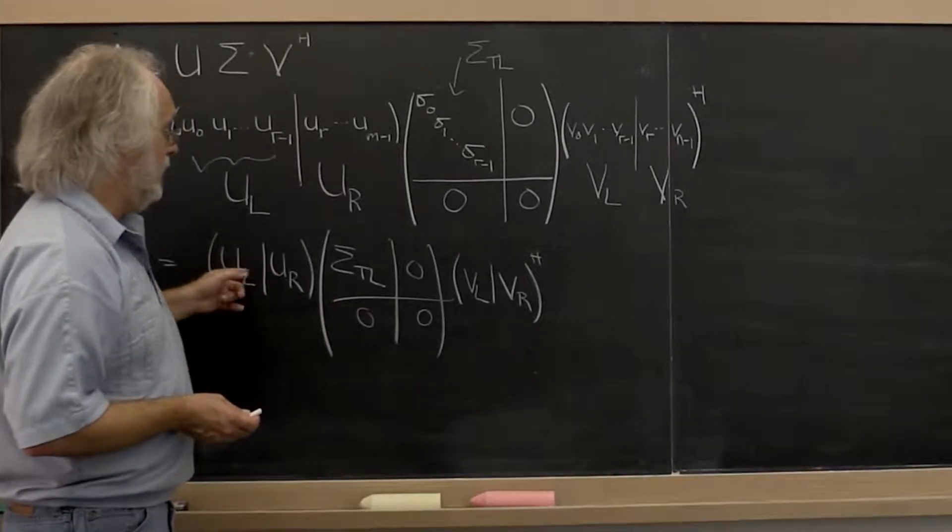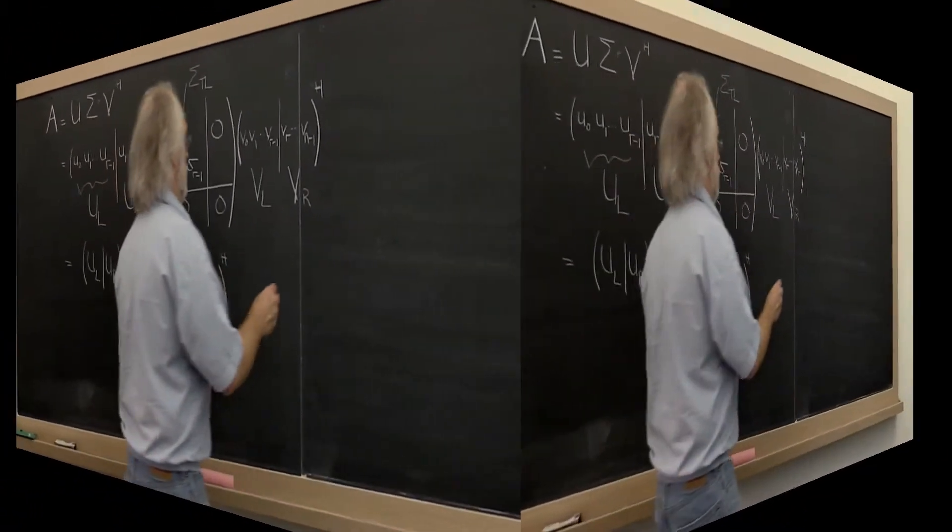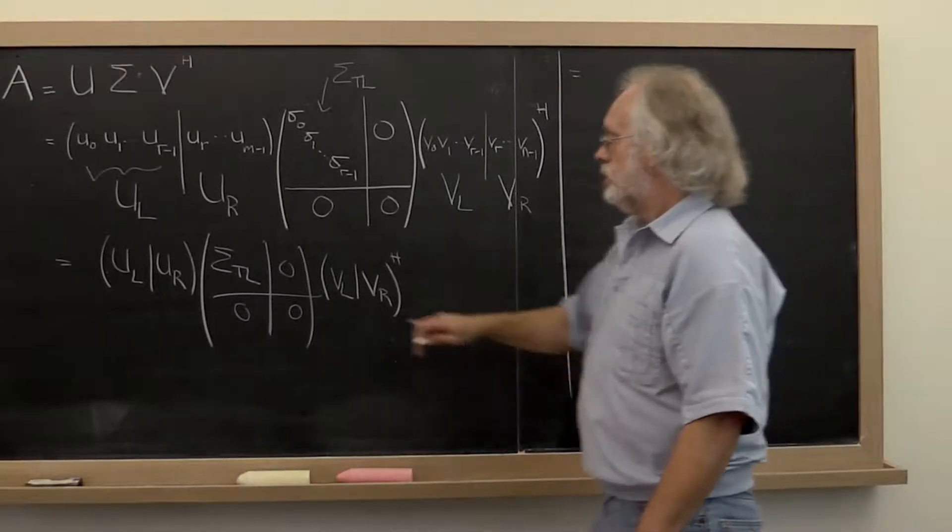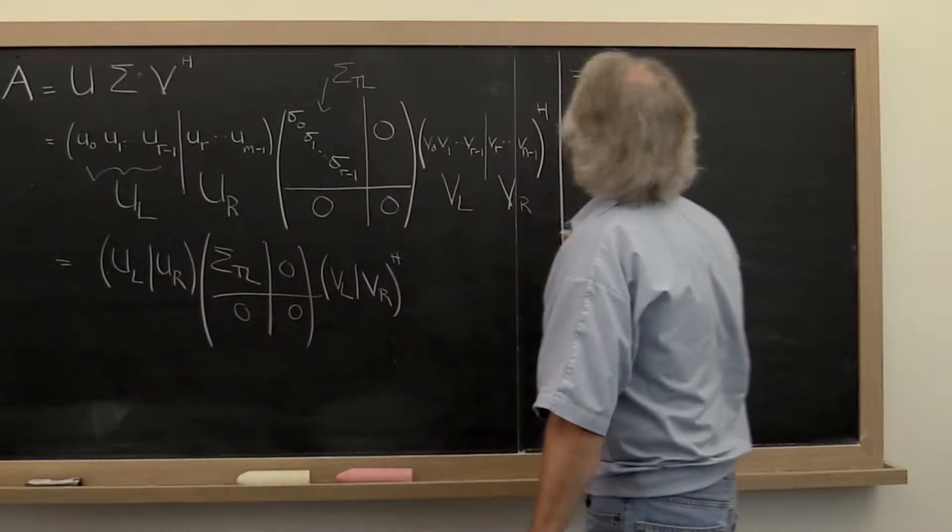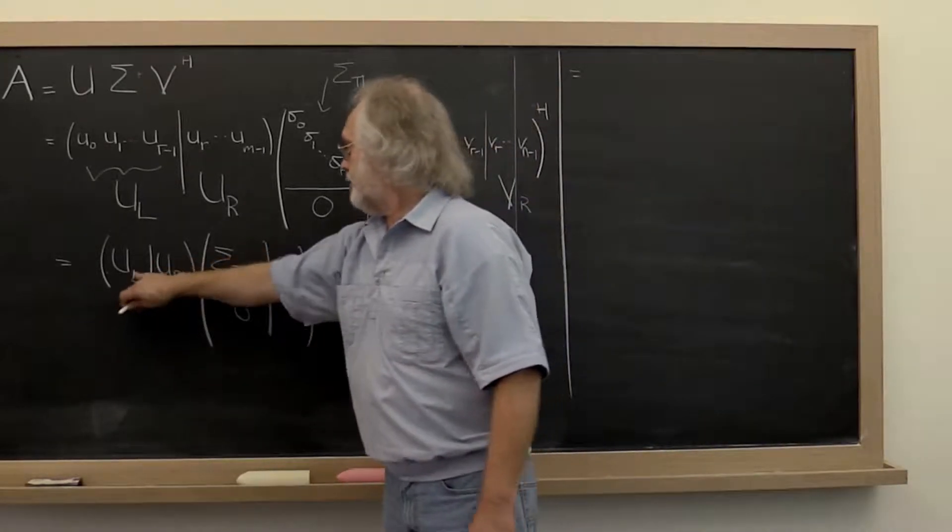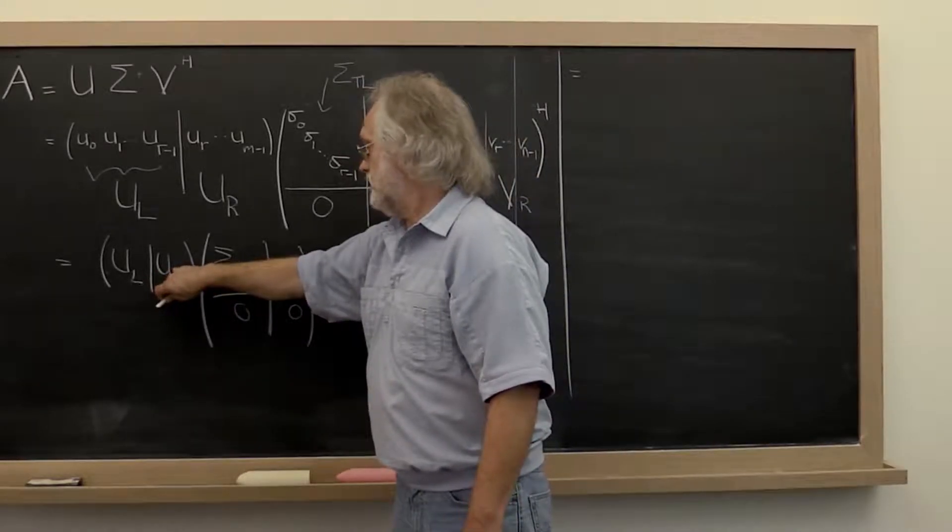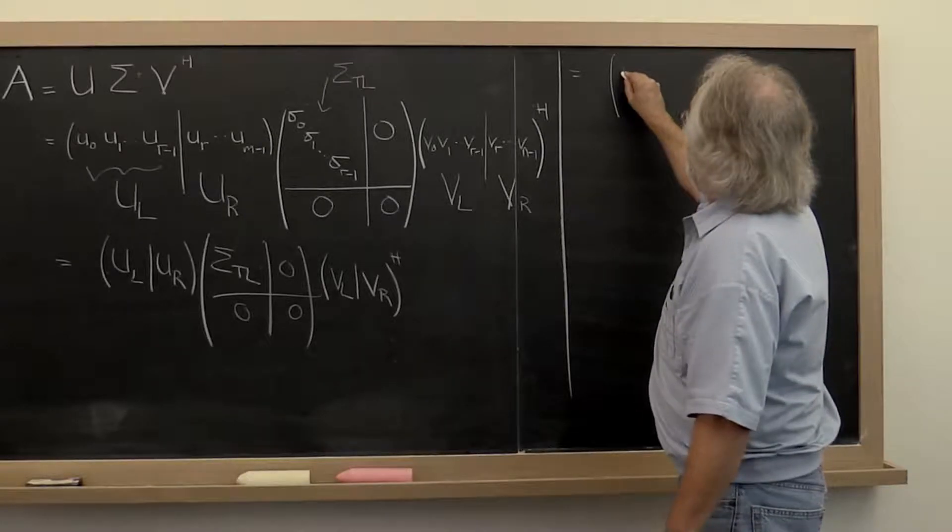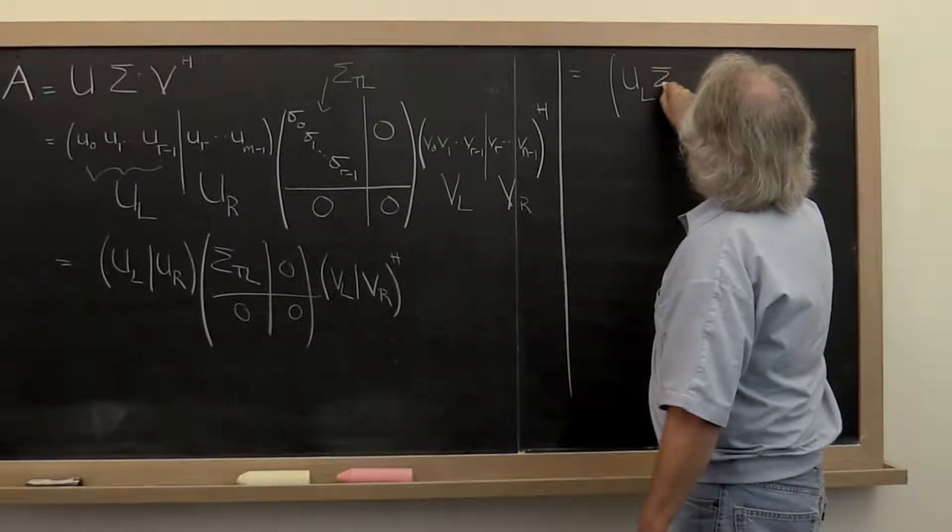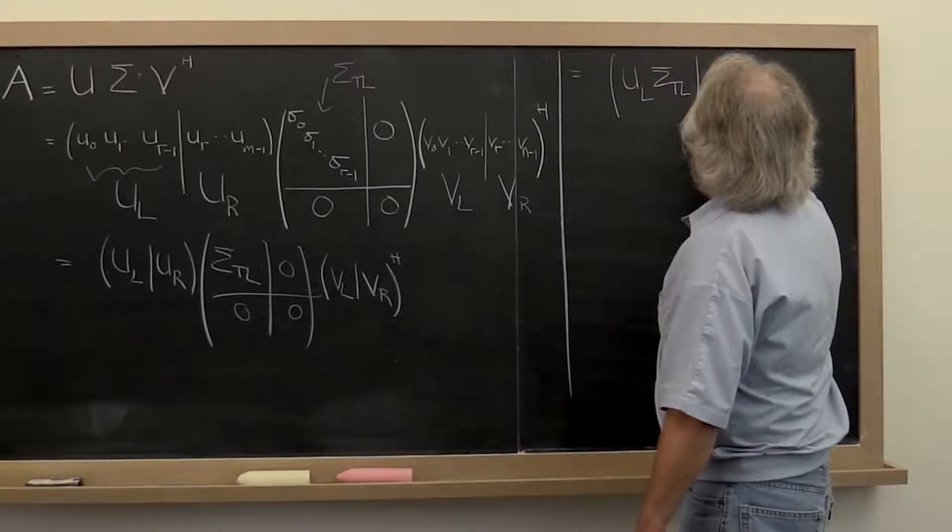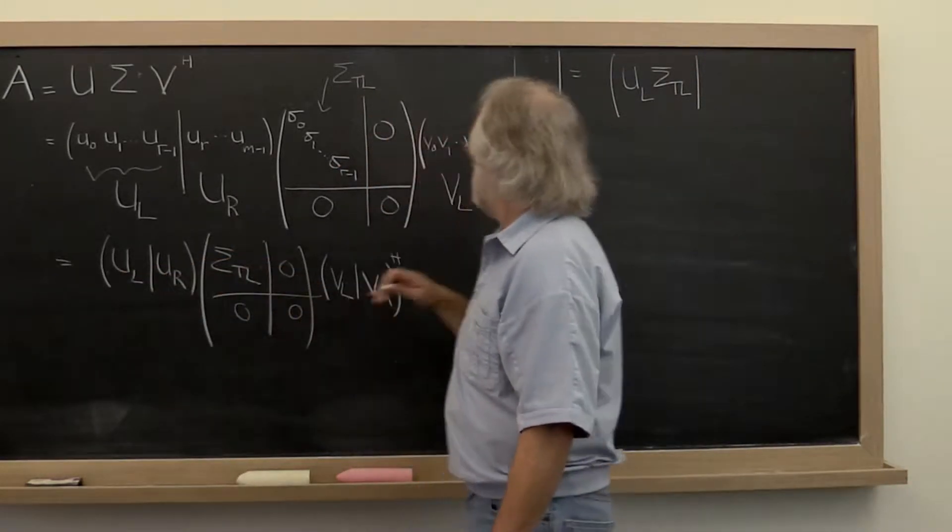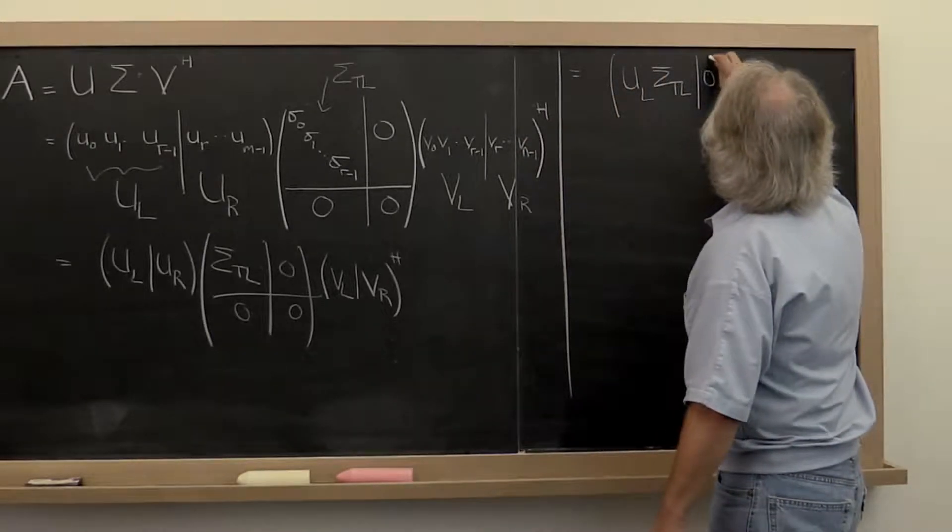Now if you multiply this out, what do you get? Well this times this gives you U left times sigma top left plus this U right times zero. So we get U left times sigma top left for the left part. And then U left times zero plus U right times zero gives you a nice block of zeros.